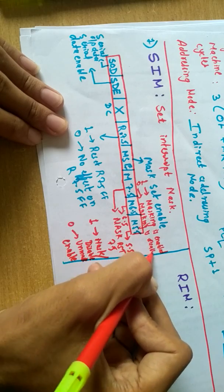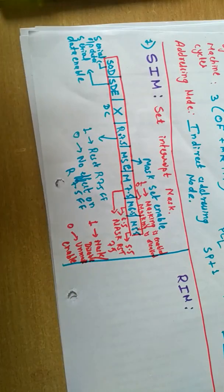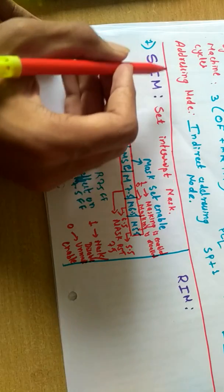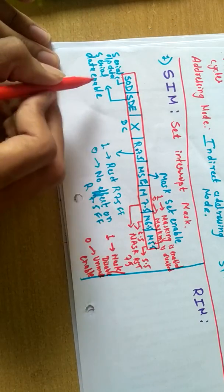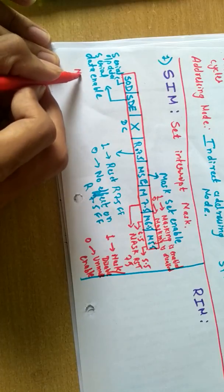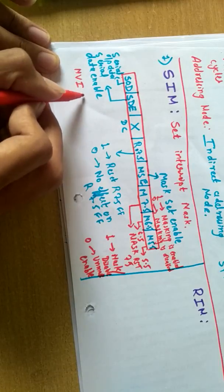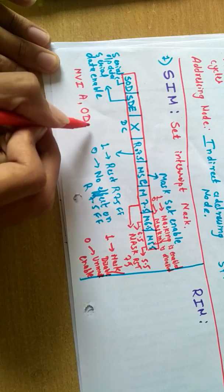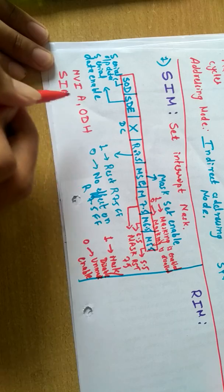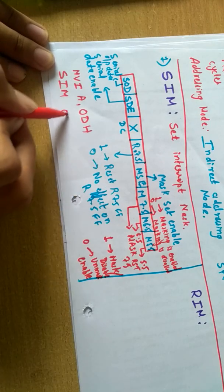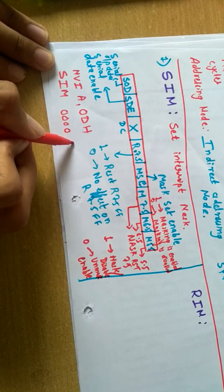How we will use this instruction: we can write like this - move immediate data, any immediate data to A, let's say 0DH, and then we write SIM.